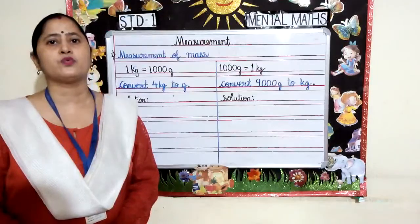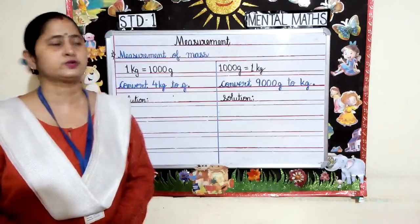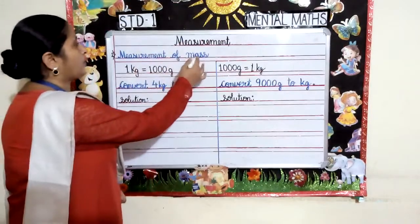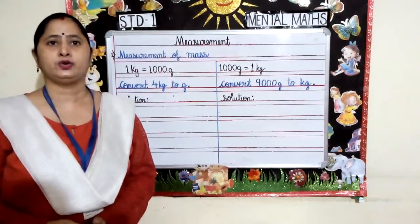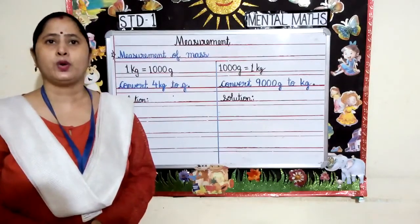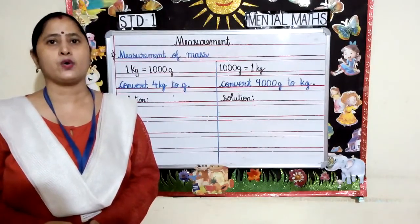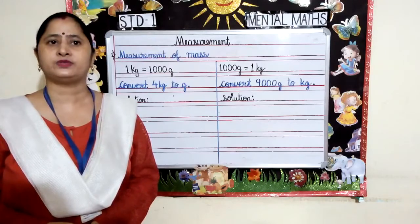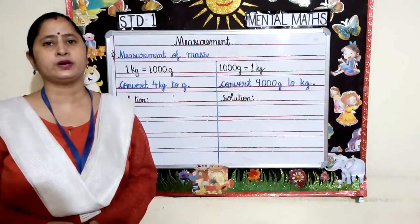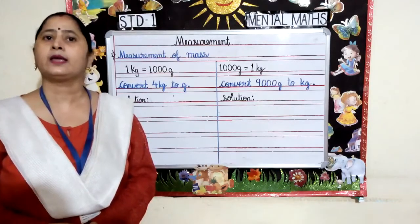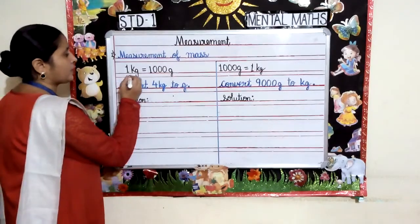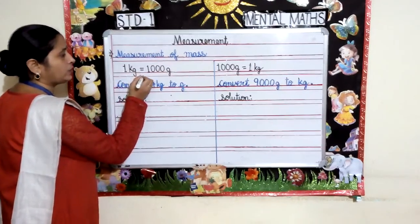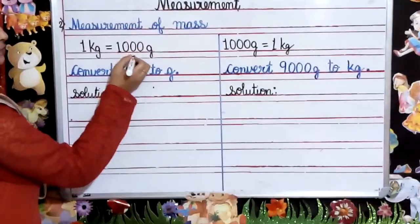Let's move on to the next topic, measurement of mass. Mass is used to measure the weight of an object. The most common units of mass are the gram and kilogram. 1 kilogram is equal to 1000 grams.